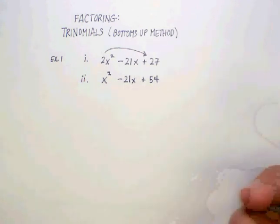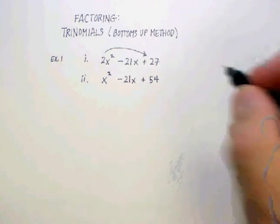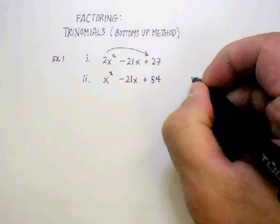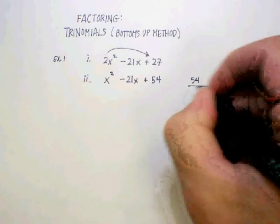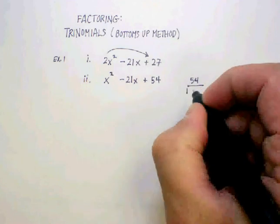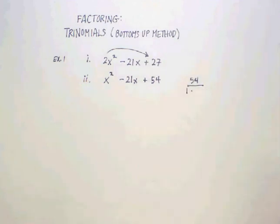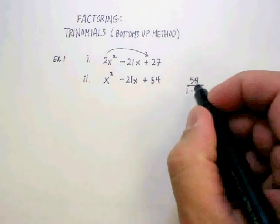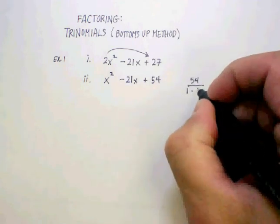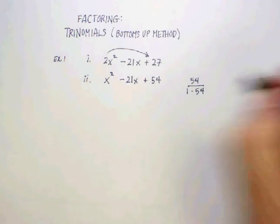Now you may not think of one right off the bat, so what I normally do is what I call pair factoring. I start with 54 and I start to think of all the pairs that will multiply to 54.